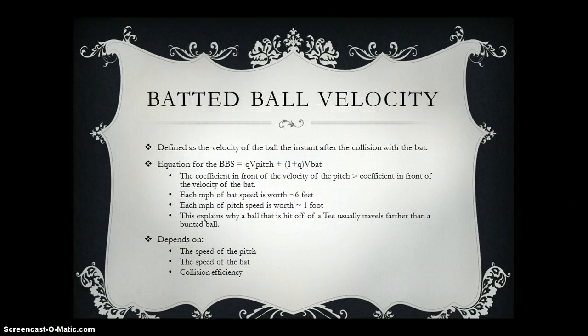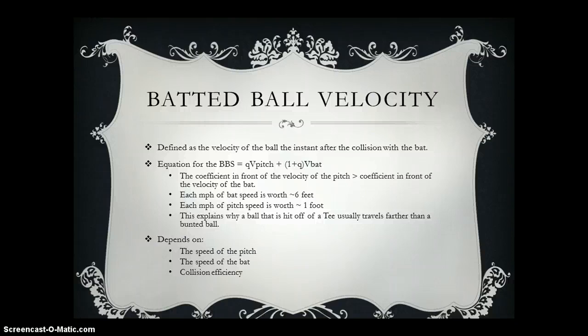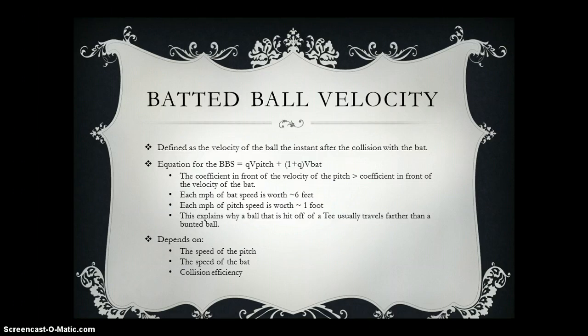The batted ball velocity is defined as the velocity of the ball the instant after the collision with the bat. The equation is q times the velocity of the pitch plus 1 plus q times the velocity of the bat. Each mile per hour of bat speed is worth approximately 6 feet, while for pitch speed it's worth only about 1 foot. This explains why a ball hit off a tee usually travels farther than a bunted ball.